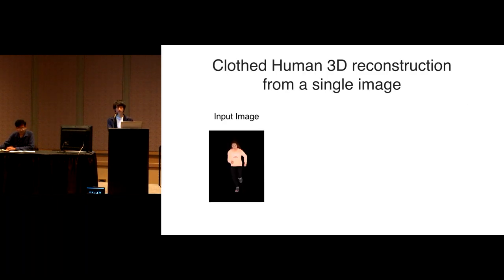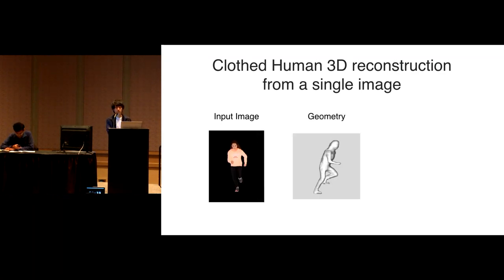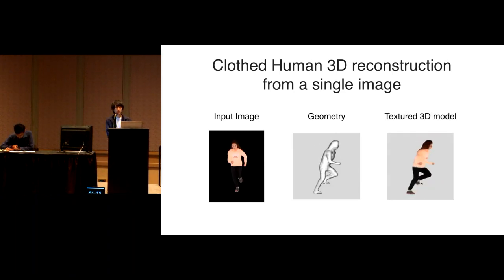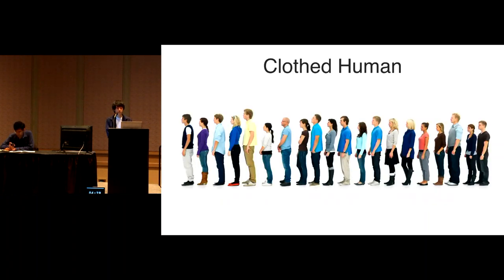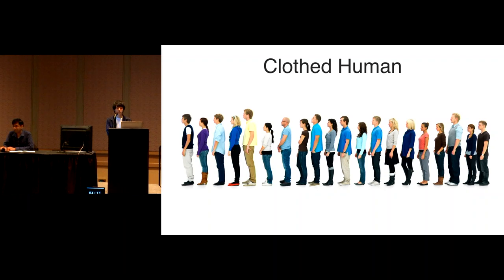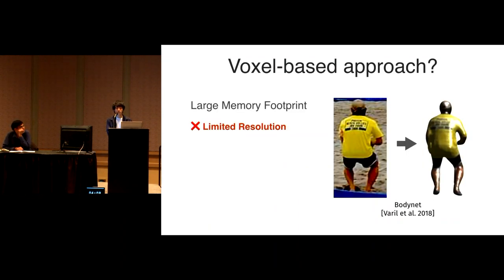We present a framework for clothed human 3D reconstruction from a single image. Given a single image, our method recovers the 3D surface of a person with clothing and infers texture including unseen sides like the backside. This is challenging due to the vast range of possible shapes and appearances, and the large portion of the human body that is occluded, requiring inference of missing geometry and texture.